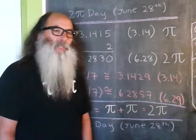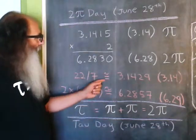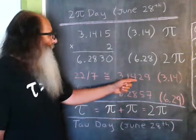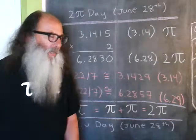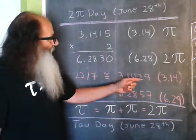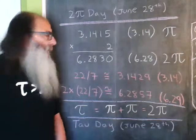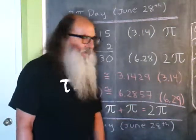22 divided by 7—if we evaluate that, it's approximately 3.1429. If I round that to the nearest hundredth, we get 3.14.